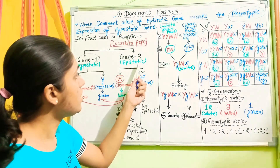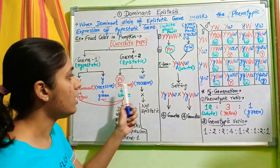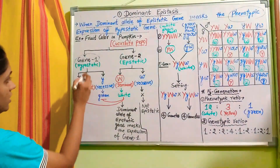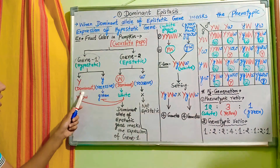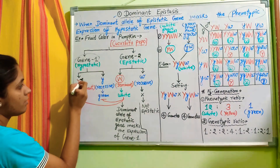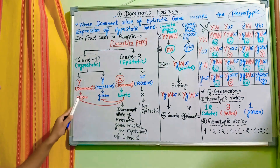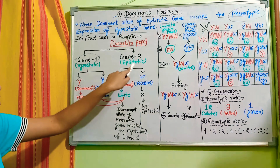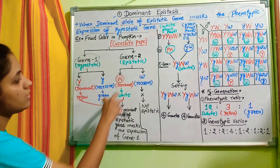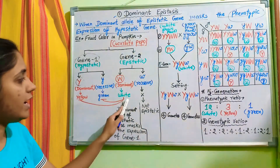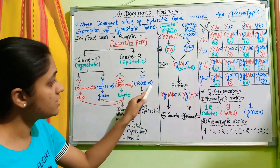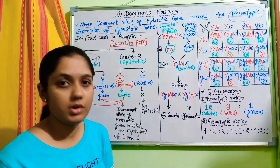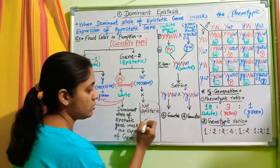Gene one has two alleles: the dominant allele Y (capital Y), which produces yellow color, and the recessive allele y (small y), which is responsible for green color. Gene two, the epistatic gene, also has two alleles: the dominant allele W (capital W), which produces white color, and the recessive allele w (small w), which produces no phenotype and is not epistatic.